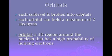Now, each orbital can hold a maximum of two electrons. So it's a 3D region around the nucleus that has a high probability of holding an electron. The Heisenberg uncertainty principle says that we can't know the exact velocity and location of an electron, but we can narrow it down to a high probability.